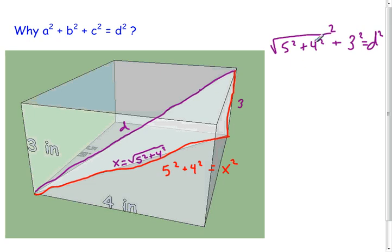And so, when we square this, the squaring cancels out the square root. We get 5² + 4² + 3² = d². And we ended up with exactly what we said. a² + b² + c² = d². Alright, so that is how to find the diagonal of a right rectangular prism or just a box.